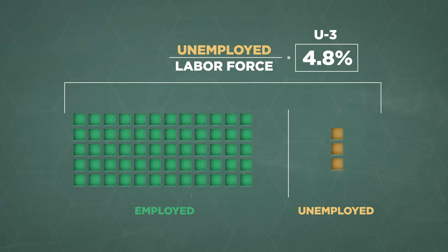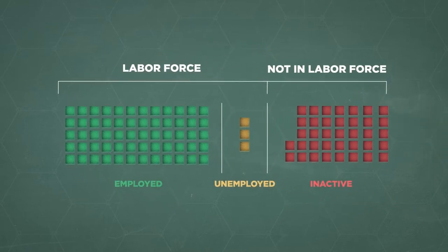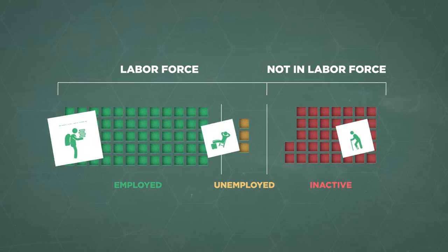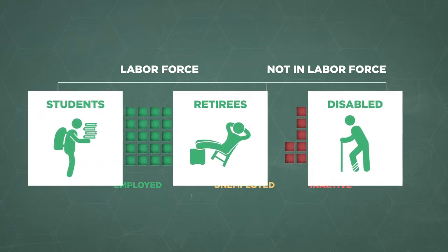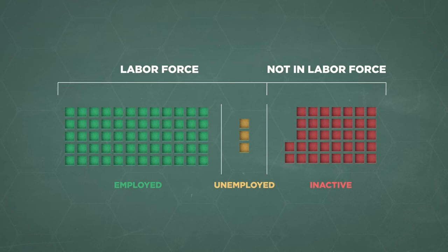But remember, many people aren't in the labor force. They're actually in a third group you might have never heard of called the inactive. The inactive is a large part of the population, and it's mostly those students, retirees, and others who don't want a job. But thanks to the same survey, we know some of the people included here do want a job — they've just stopped actively looking. And because of that, U3 doesn't count them.